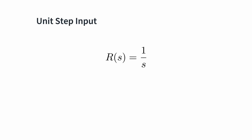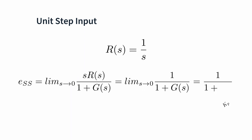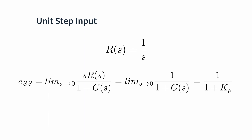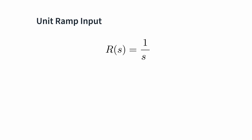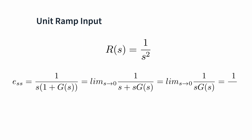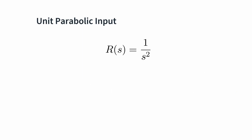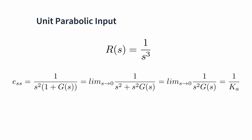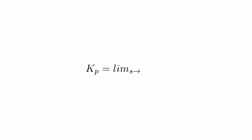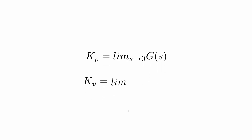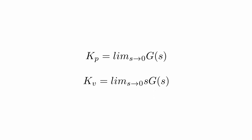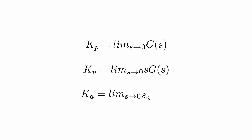For a unit step input, which is 1 over s, the steady state error is represented by 1 over (1 + Kp), where Kp is called the position error constant. Note that Kp can be either positive or negative, indicating that the error can be higher or lower than anticipated. For the unit ramp input, which is 1 over s squared, the steady state error is represented by 1 over Kv, where Kv is called the velocity error constant. And the unit parabolic input, which is 1 over s cubed, is similar with 1 over Ka, where Ka is called the acceleration error constant. To summarize: Kp is the limit as s goes to zero of G(s); Kv is the limit as s goes to zero of s times G(s); and Ka is the limit as s goes to zero of s squared times G(s).